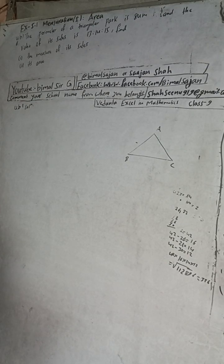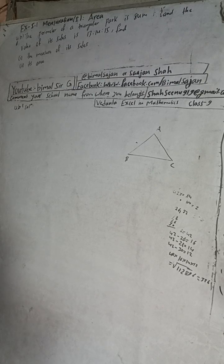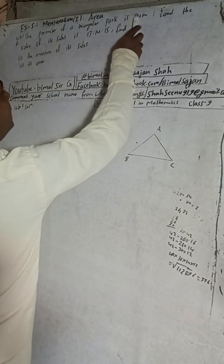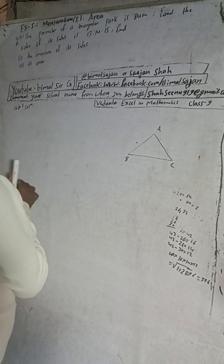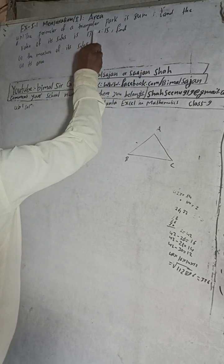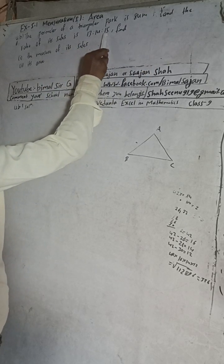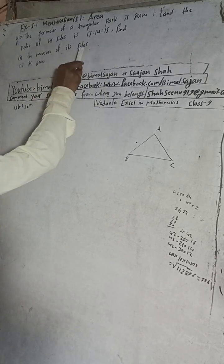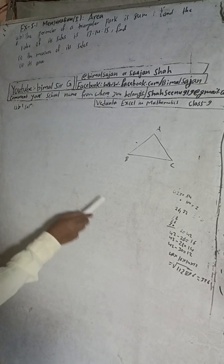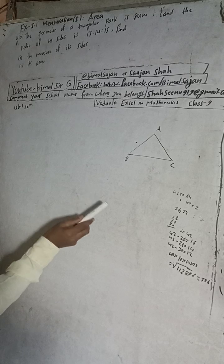Hi class 9 and 10 students, welcome back to Vimal Surgy YouTube channel. This is question number 4b, exercise 5.1, mensuration first part area, Vedanta Excellent Mathematics class 9. The question is: the perimeter of a triangular park is 84 meters and the ratio of its sides is 13:14:15. Find the measure of its sides and its area.